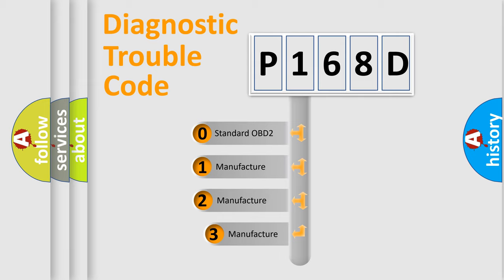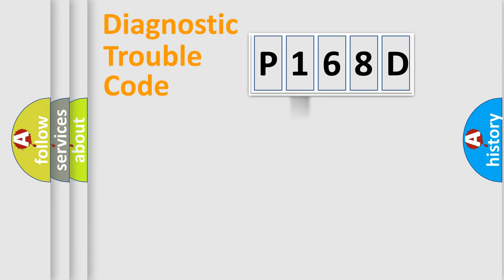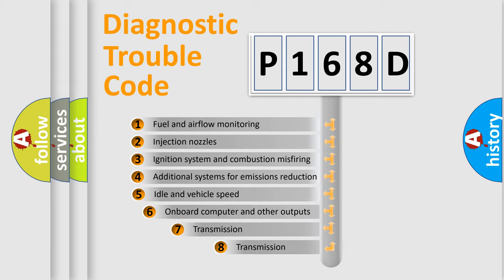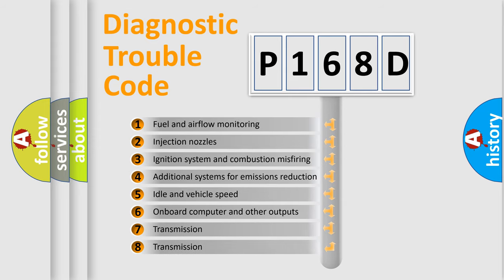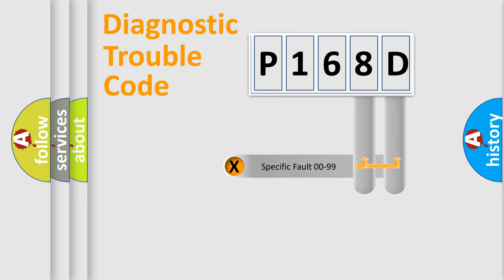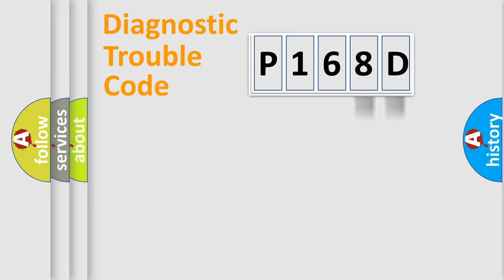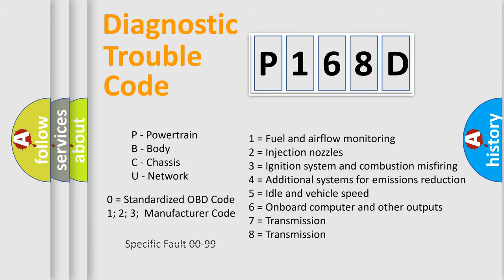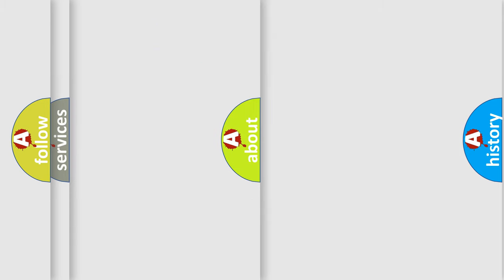If the second character is expressed as zero, it is a standardized error. In the case of numbers 1, 2, or 3, it is a more specific expression of a car-specific error. The third character specifies a subset of errors. This division is valid only for the standardized DTC code, where the second character is expressed by the number zero. Only the last two characters define the specific fault of the group.